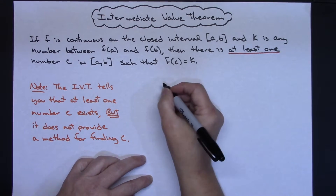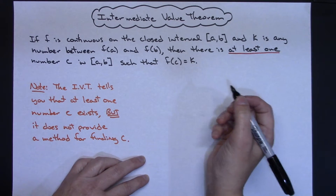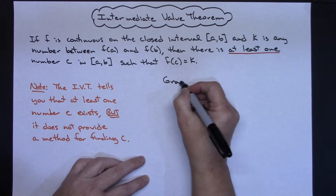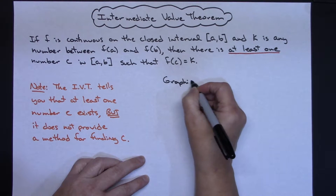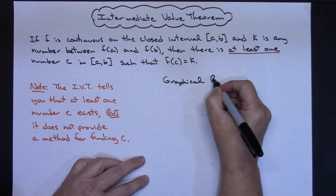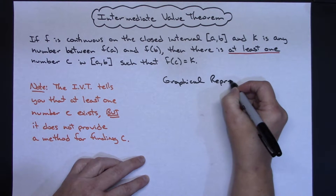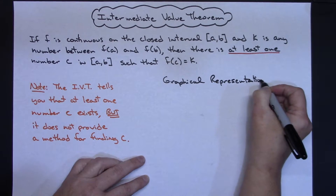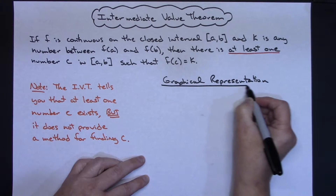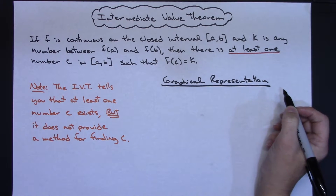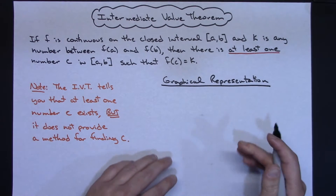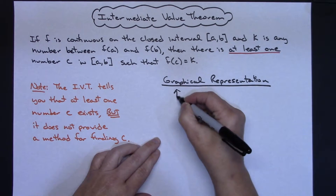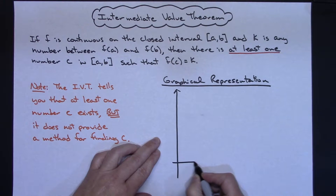Now I want to take a look at a graphical representation of this theorem, so that we can picture what's going on and understand why there's at least one value C in the interval from A to B. Let's draw a little graph here.